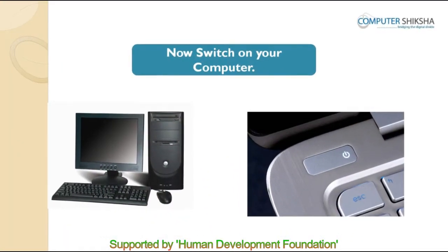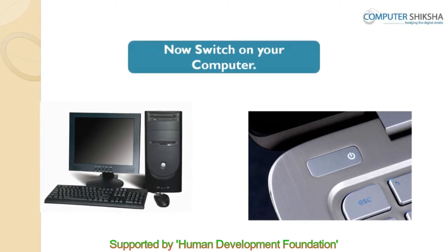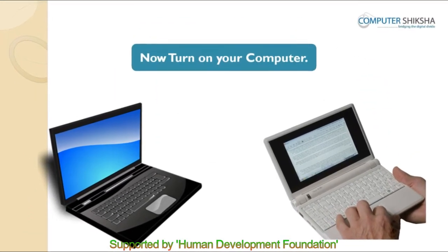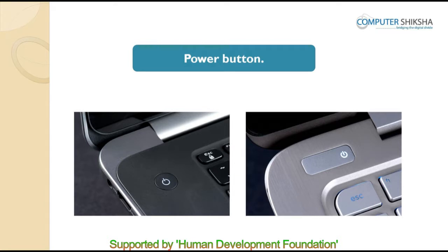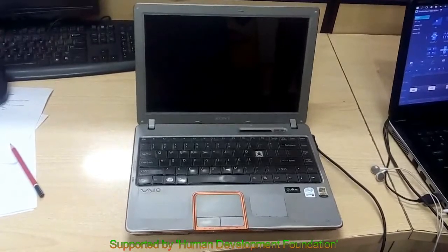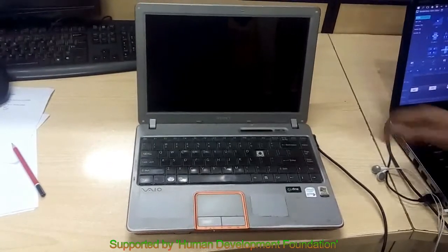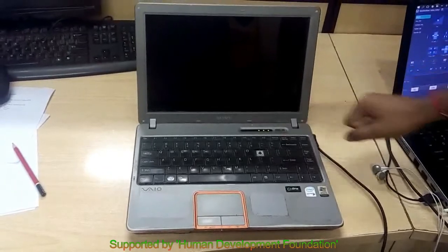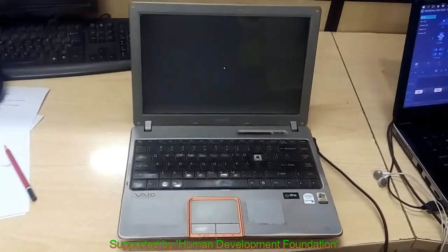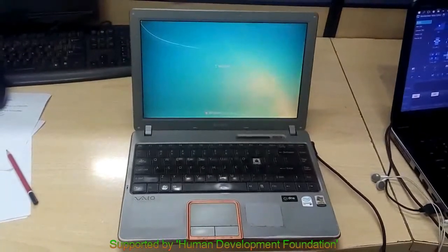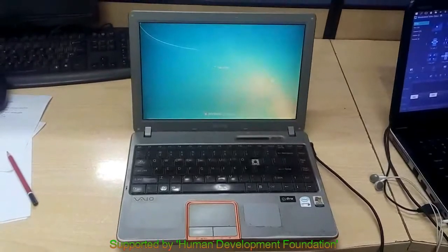If you are using a desktop computer, then to power it on, just press the power button once with your finger and your computer will get powered on. In case you are using a laptop or a notebook computer, locate the silver-colored power button on your device. Just press once on this silver-colored button and your laptop or notebook will get powered on. By now, all of your computers would have been powered on, whether it's a desktop, a laptop, or a notebook.